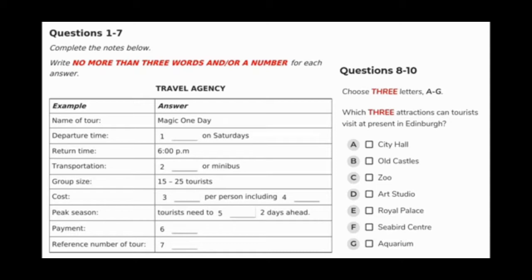You will hear a conversation between a clerk and a tourist about a short trip. First, you have some time to look at questions 1 to 5. You will see there is an example that has been done for you. The information relating to this will be played first.